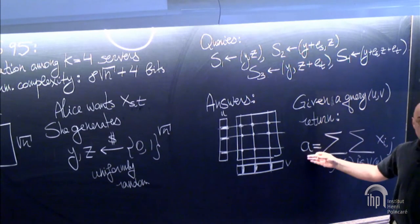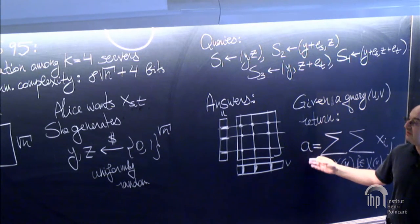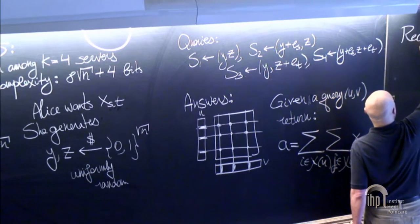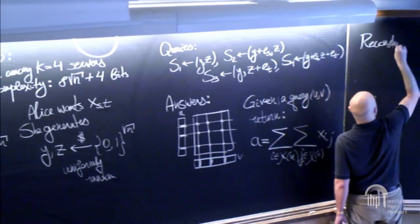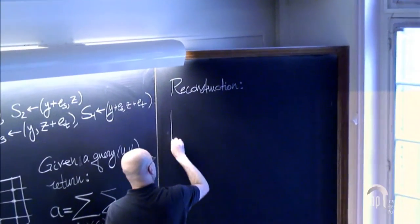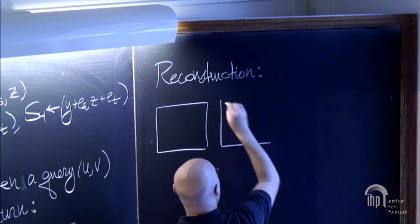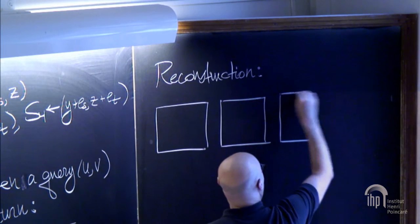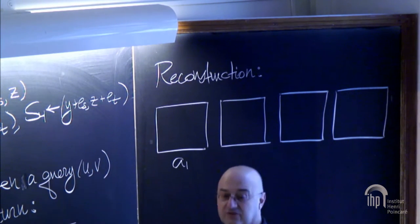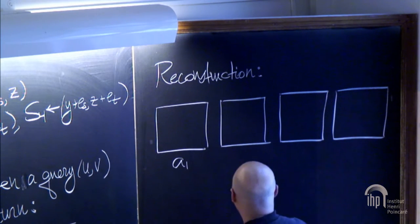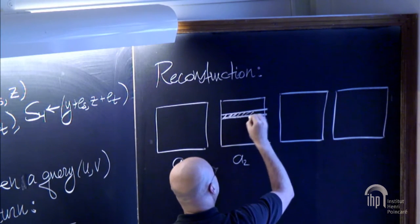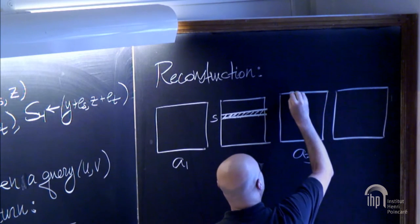Now Alice will receive four of those bits. How will she read the bit she wants? Reconstruction: A1 is the answer from server 1, nothing flipped. A2 has row s flipped. A3 has column t flipped. A4 has both of them flipped.